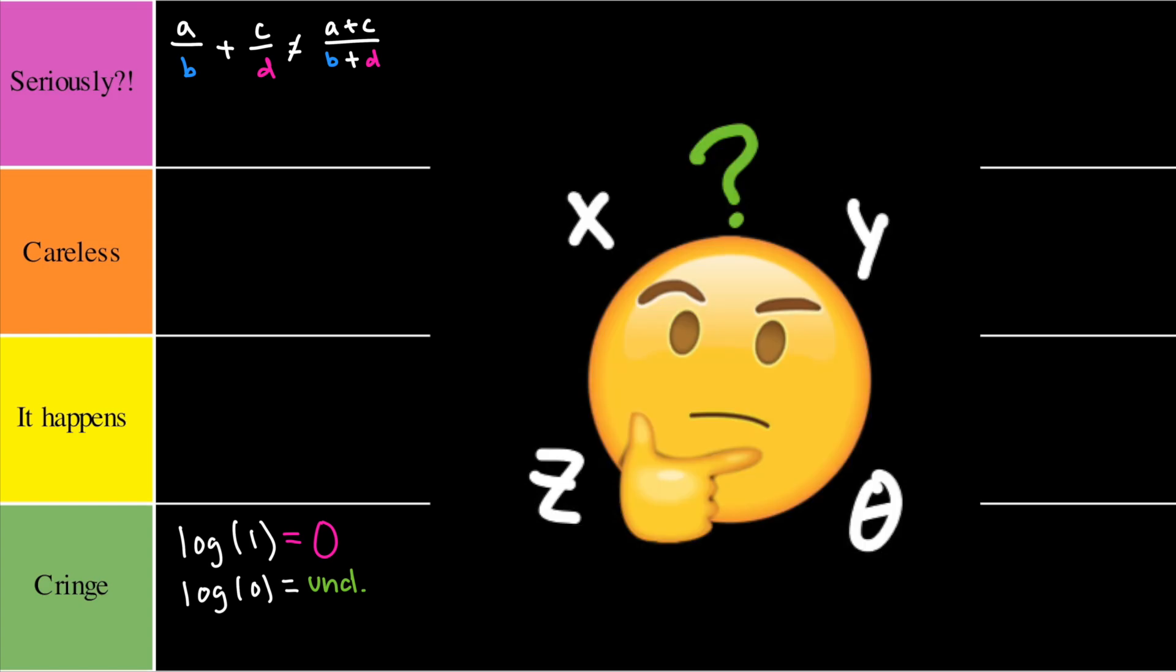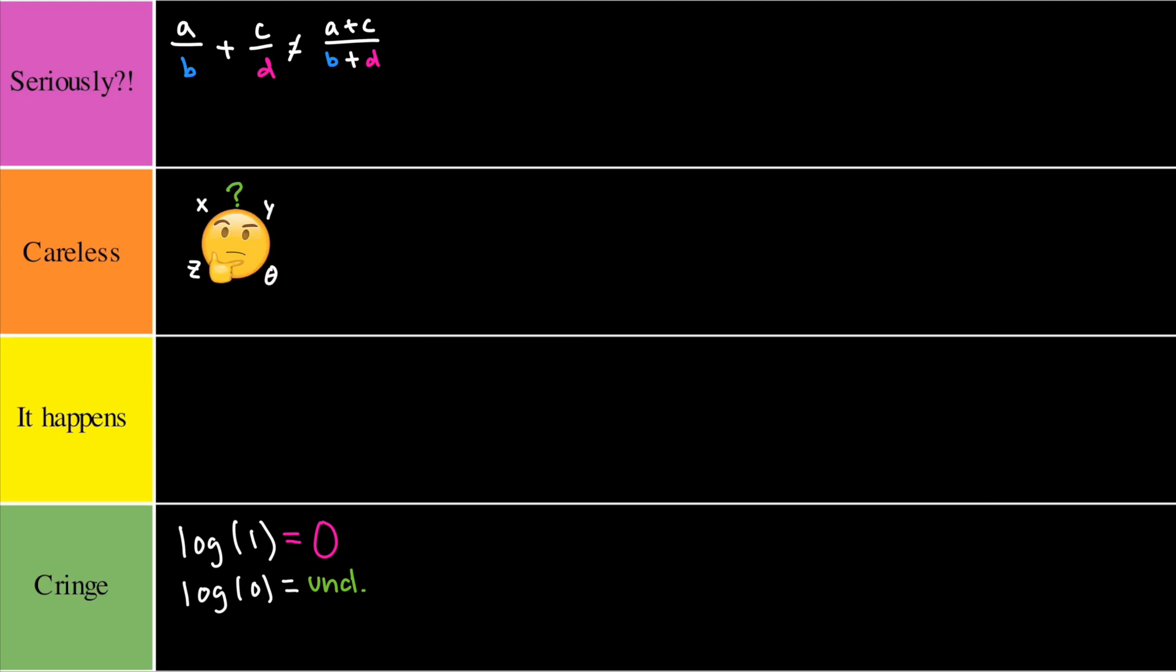Solving for the wrong variable is a situation we see often. This can be fixed by just reading the instructions. So I would have to put this in the careless tier.